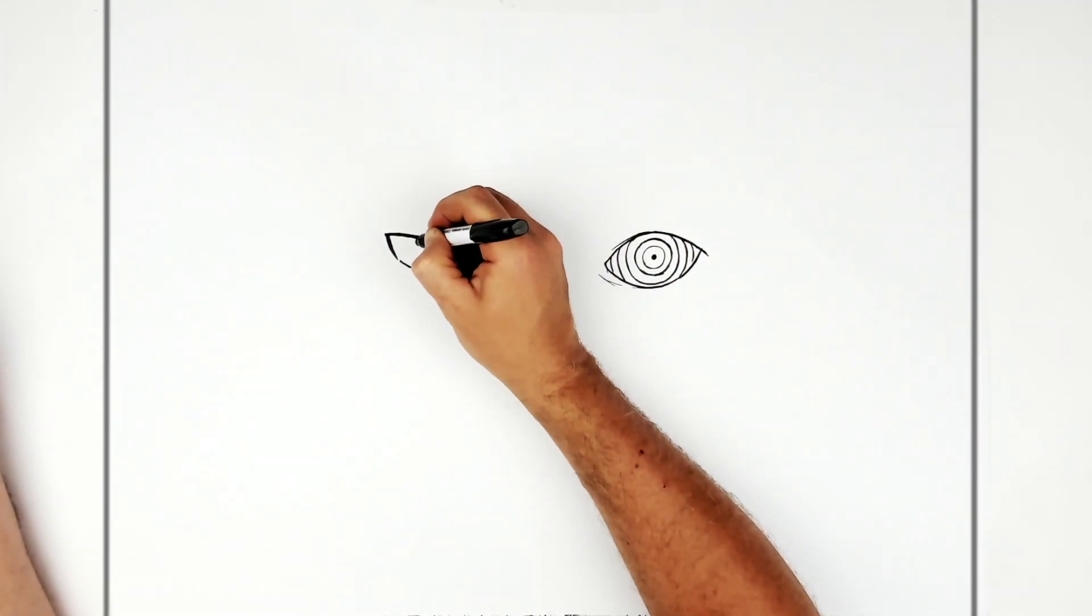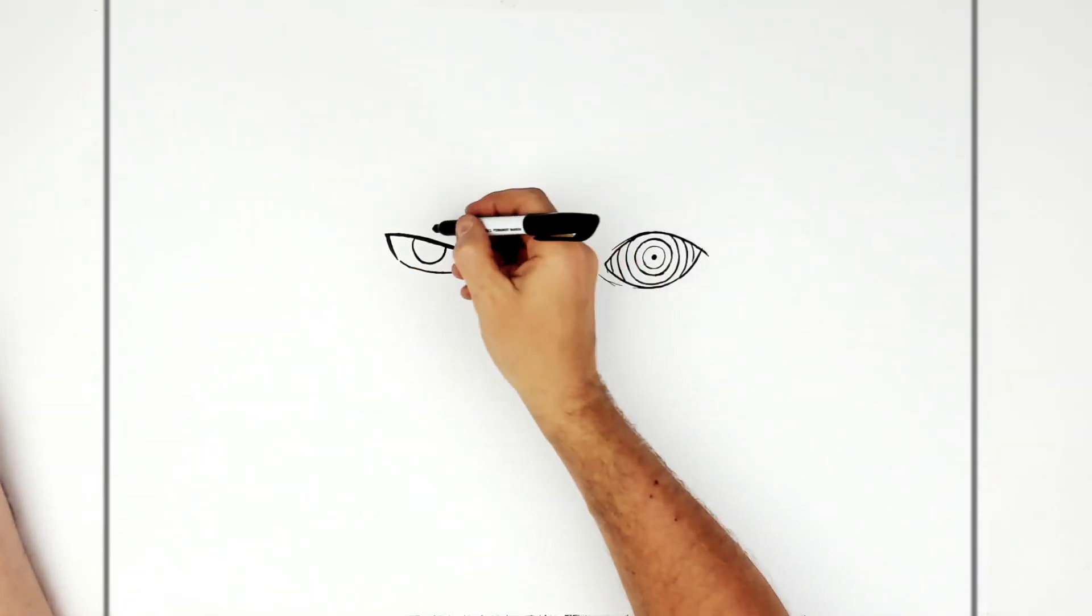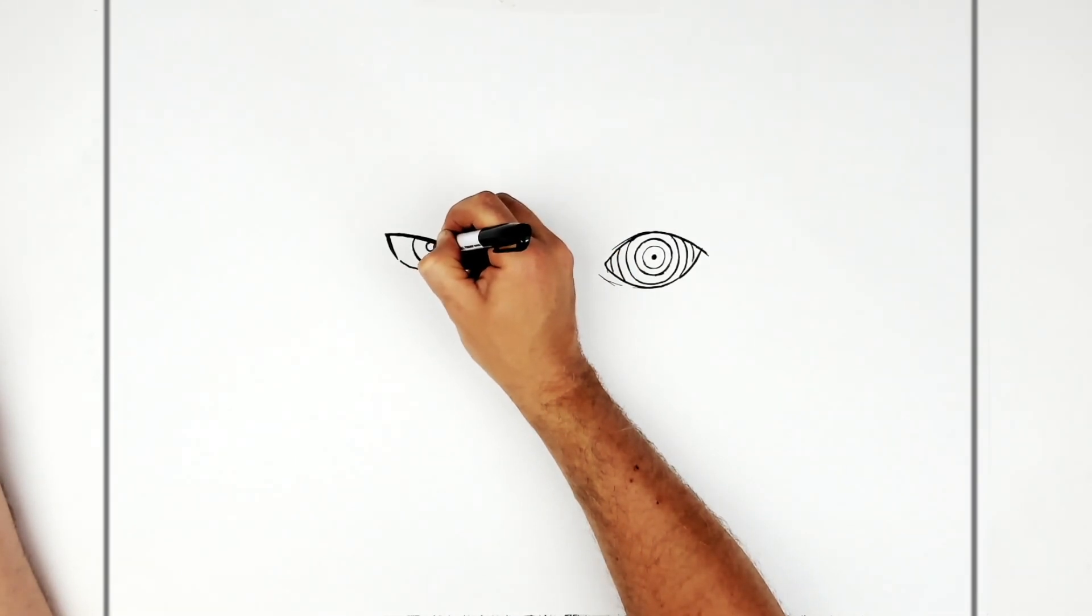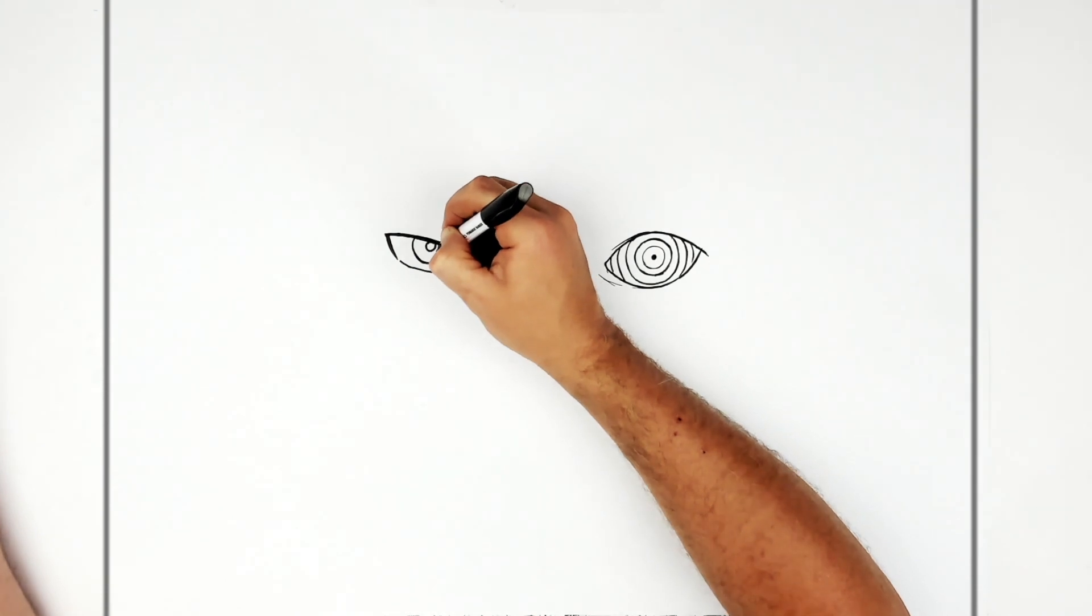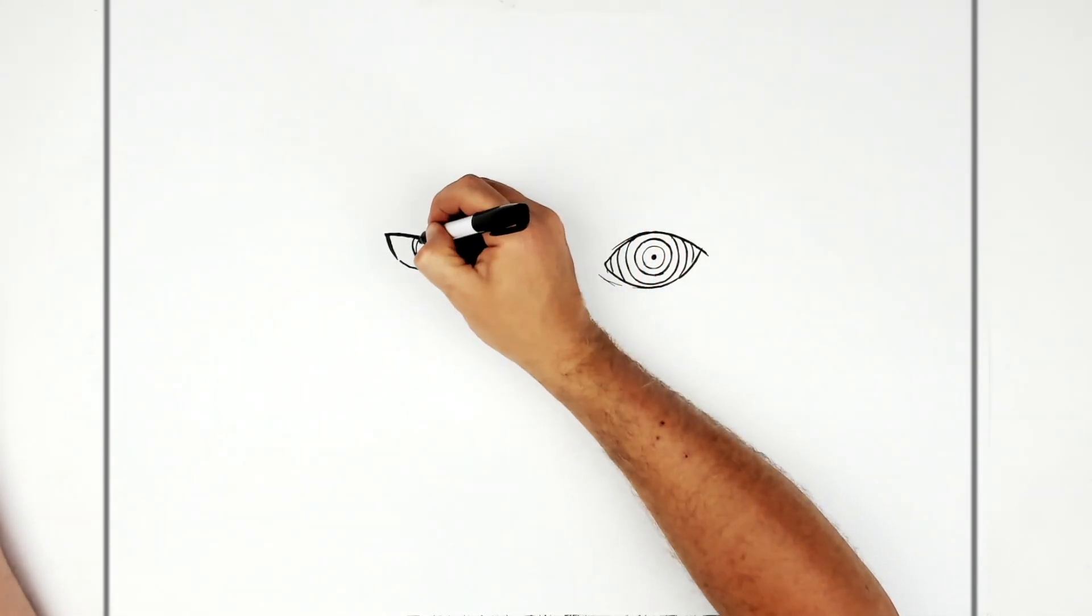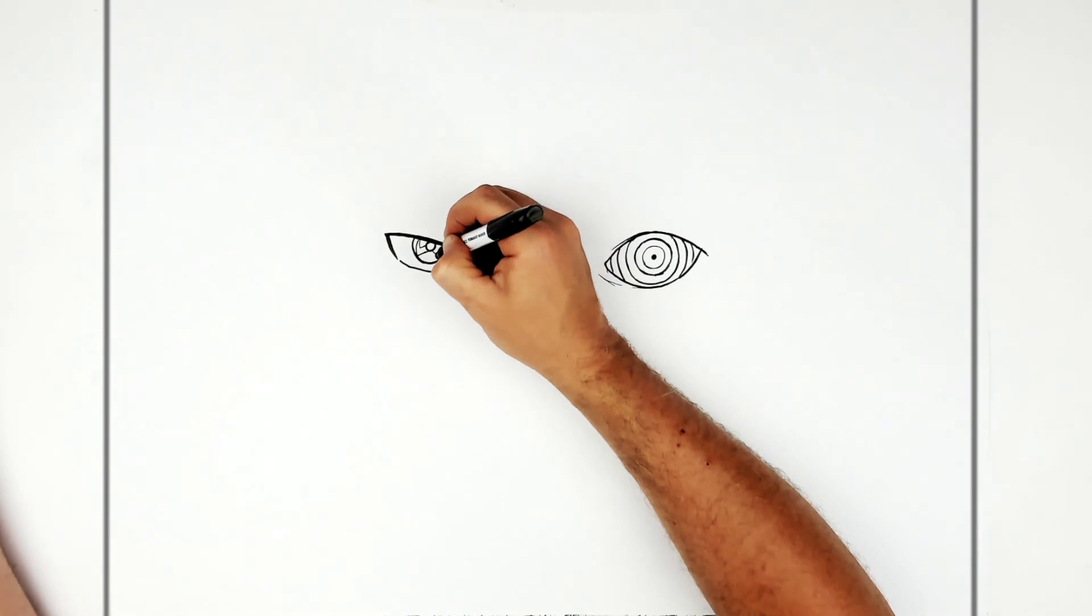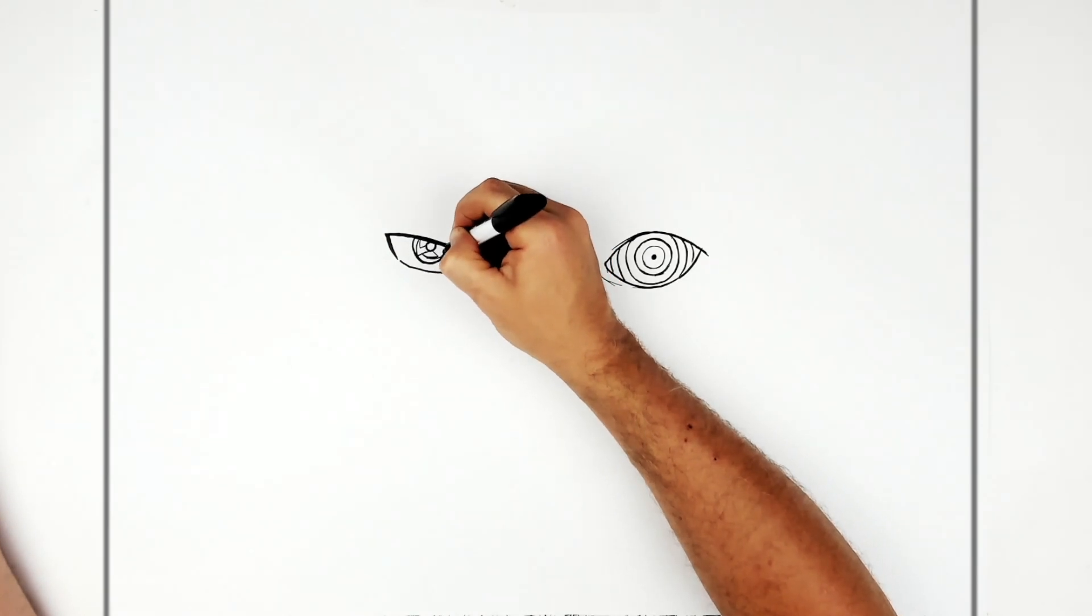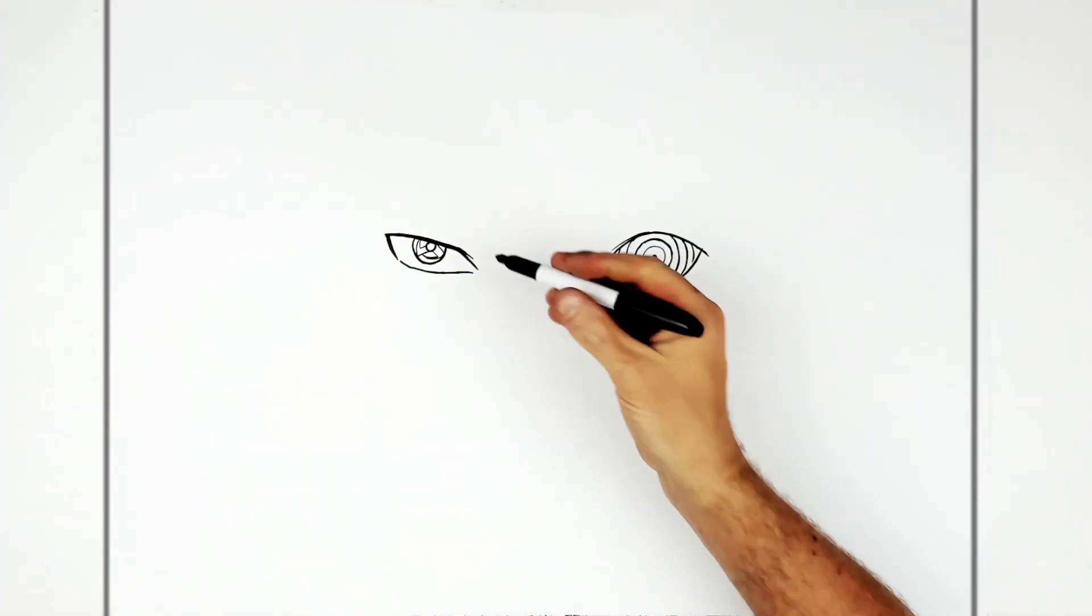So then his Sharingan eye, so we've got this half circle coming down up to there and then the pupil. Like so and then we have his Mangekyo inside. So it's this sort of spiked hook kind of thing. So it goes down there and then hooks back up that way. Like so and that's just black in there.